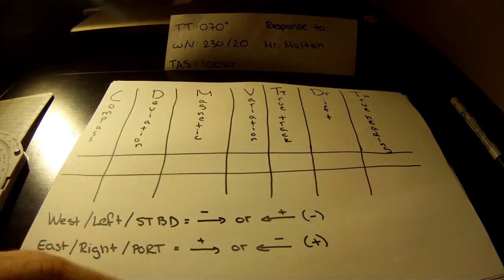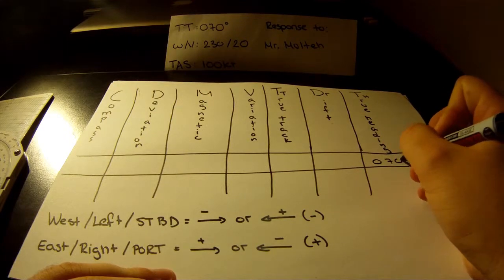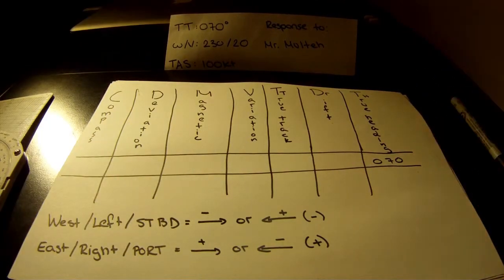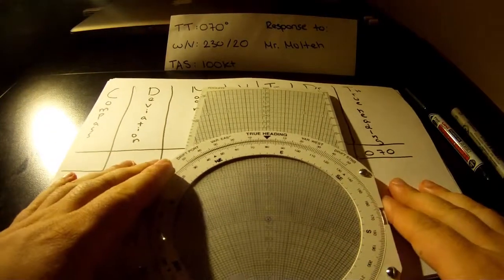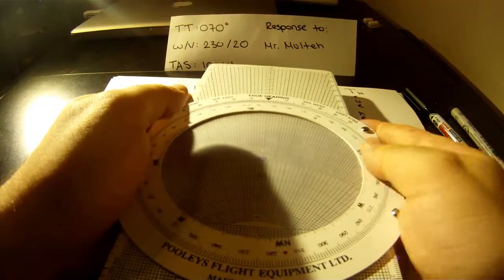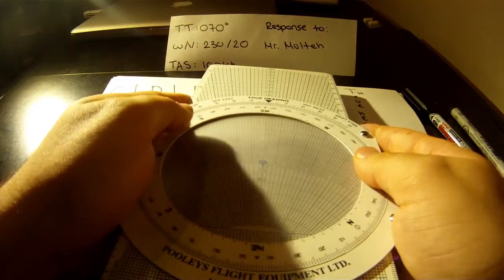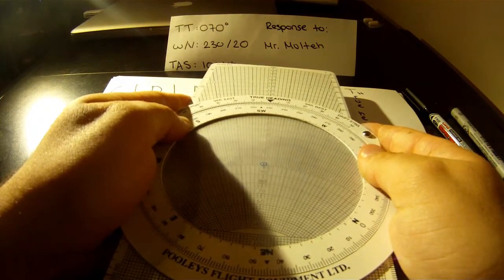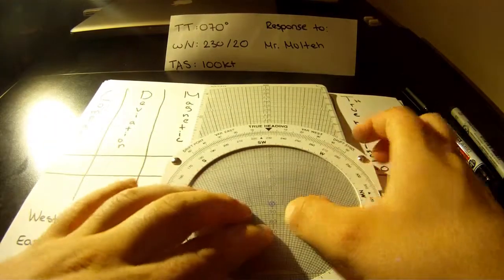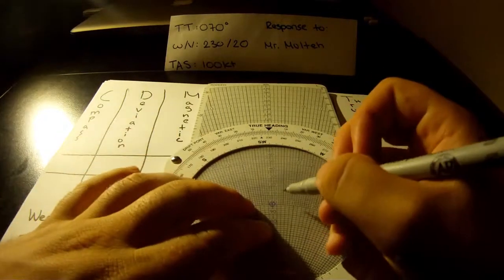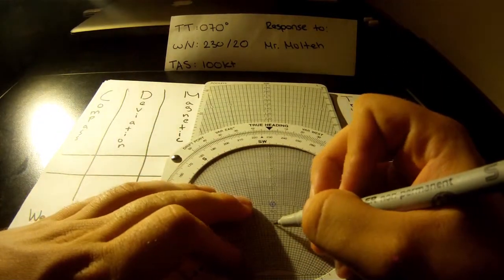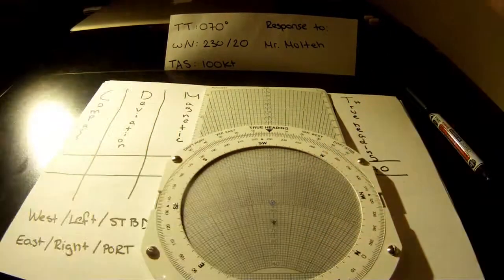So we have a true track of 070 — that's all we know so far. We're going to take our CRP, our trusty little whiz wheel, put the center dot on 100, and we're going to spin it to the wind direction where it's coming from. So we set it to 230, then mark 20 knots below the center line with a little cross. Fantastic.